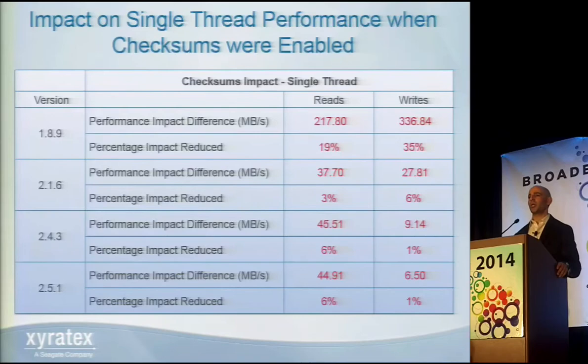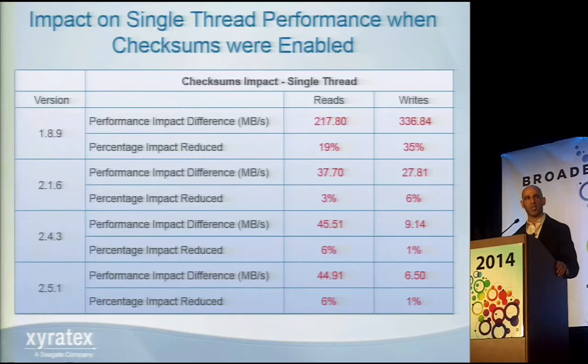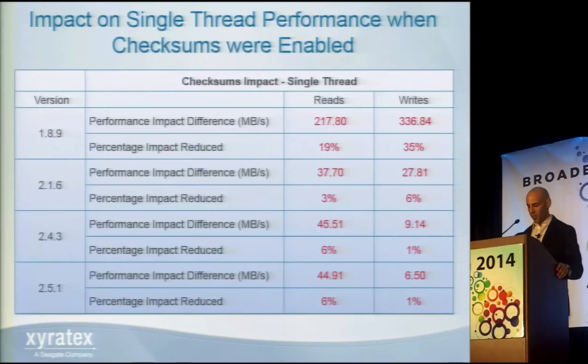I also wanted to isolate single thread performance with checksums enabled. The performance impact on all four client versions was biggest on 1.8.9 — up to 19% on reads and up to 35% on writes. As we moved to the 2.x client code, the checksum impact on single thread performance was much less. 2.4.3 and 2.5.1 had about 6% less performance impact on reads and about 1% on writes, which was very encouraging. Historically I thought checksums impact was much larger, but with the 2.x client code it's much smaller.